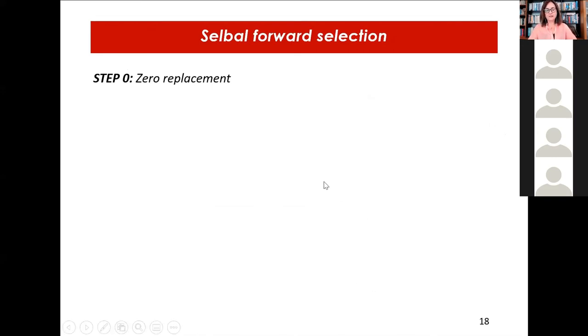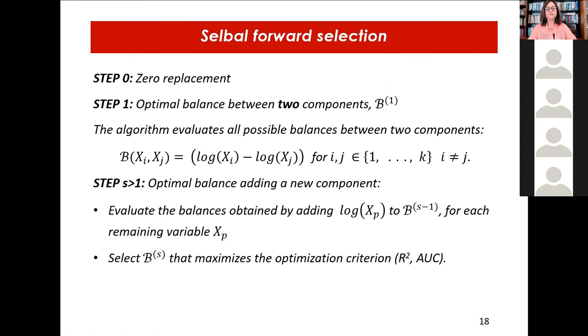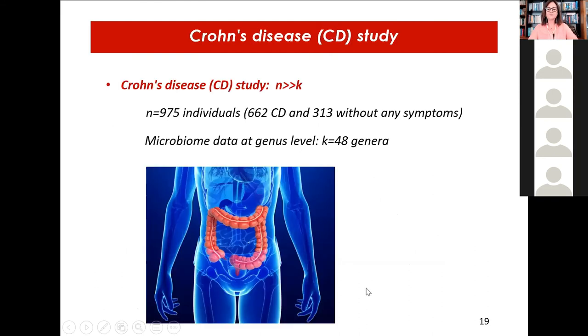And the approach is as follows. We first start by replacing zeros. Then we check all the log ratios with two components and take the one that is optimal, the one that optimizes the evaluation criteria. And then we keep putting components in the numerator or the denominator of the log ratio, while this adding variables increases the optimization criteria. And then we'll stop including variables by cross-validation criteria. We perform cross-validation in order to know what is the optimal number of components that will be containing this balance.